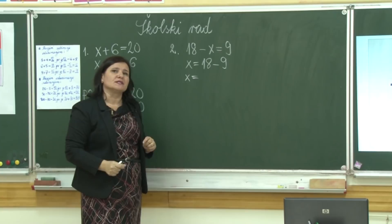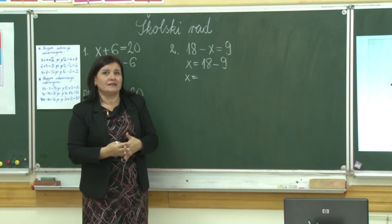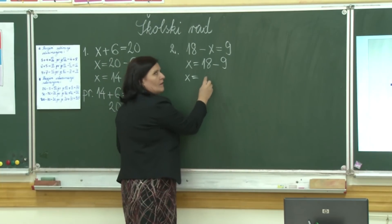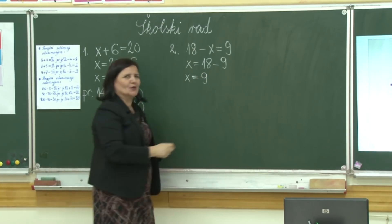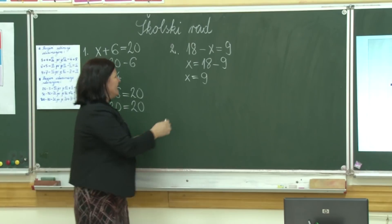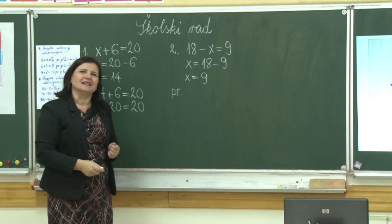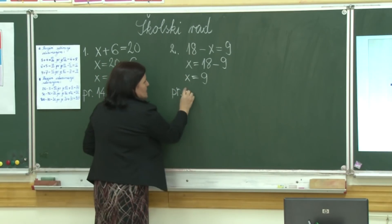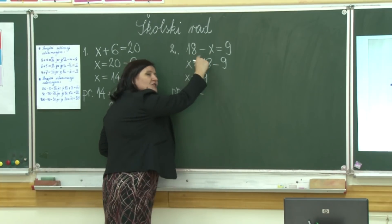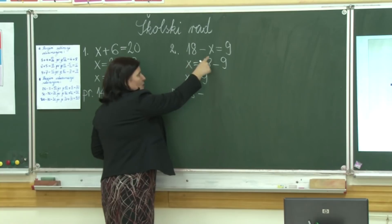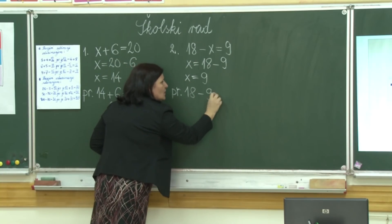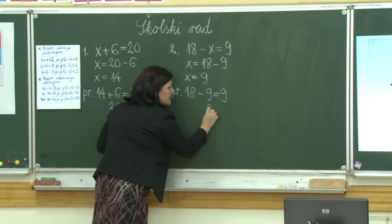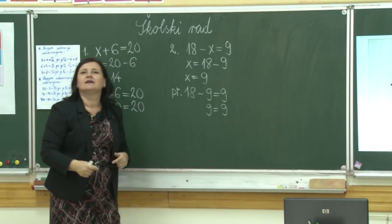Koliko je 18 minus 9? Ovo mi je najslađe: 2 i 2 je 4, 3 i 3 je 6, 5 i 5 je 10, 8 i 8 je 16, a 9 i 9 je 18. Bravo! Moramo provjeriti — je li 9 jednako 9? Umjesto x vraćamo se na početak zadatka i pišemo broj koji smo dobili — 18. Pa: 18 minus 9 je 9. Da li je 9 jednako 9? Da.